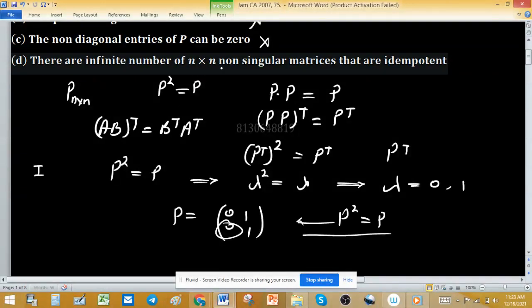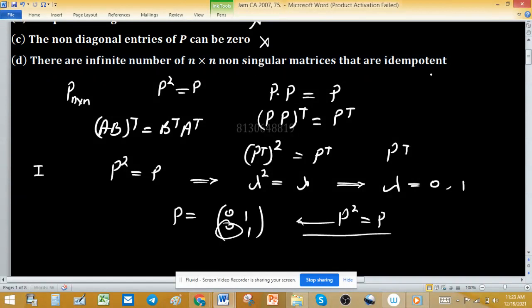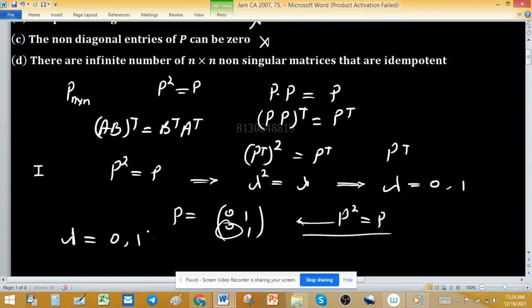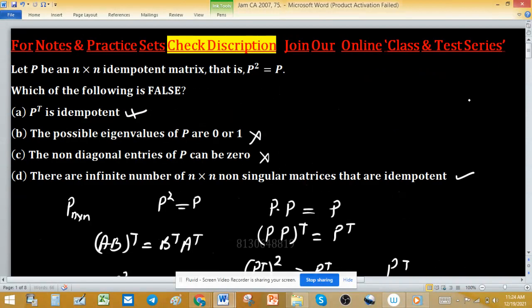There are infinite number of n by n non-singular matrices that are idempotent. This option D is false because eigenvalues are 0 and 1 and their product will be 0, meaning determinant is 0. If determinant is 0, it means the matrices are singular. But given non-singular, this statement is false and will be desired. So option D is correct.